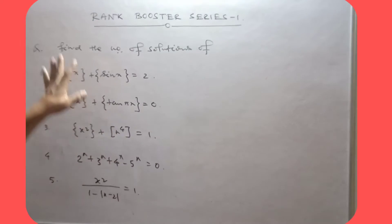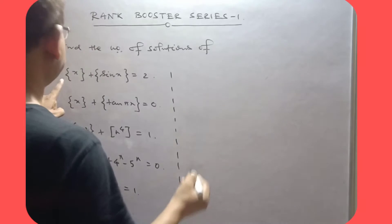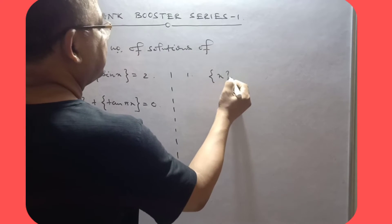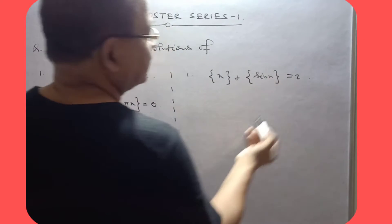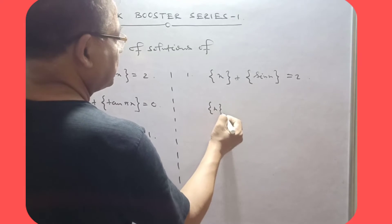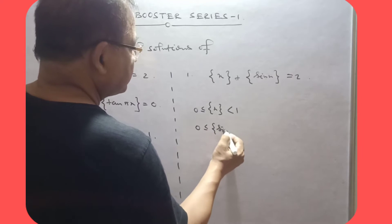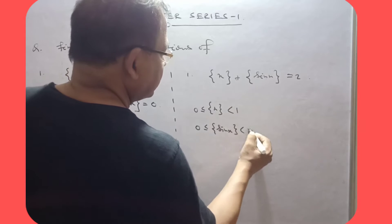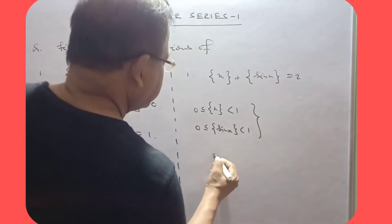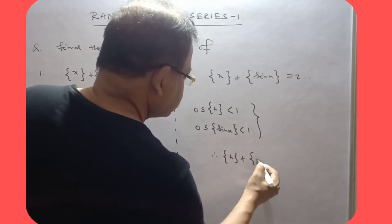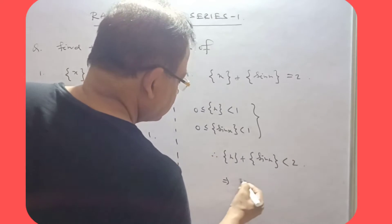Now the first question: find the number of solutions. Here we have fractional part of x plus fractional part of sin x equal to 2. The fractional part of x is greater than or equal to 0 but less than 1, and similarly fractional part of sin x is less than 1. When you add both, the sum is less than 2, but we need equality at 2 — so there is no solution.